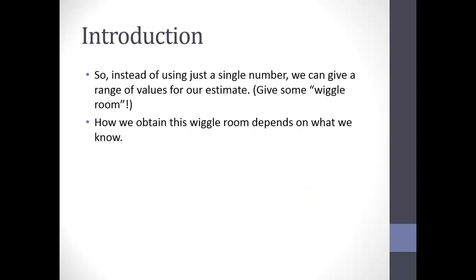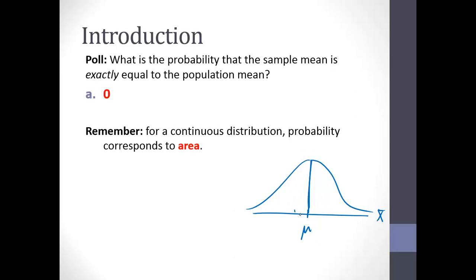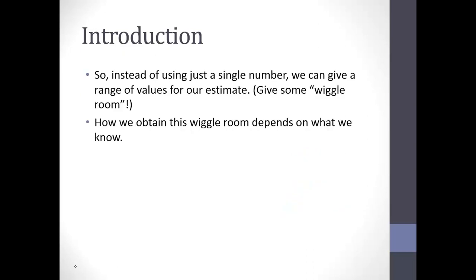Instead of saying the population mean is exactly equal to the sample mean, we're going to give a range of values and say the population mean is probably somewhere in this range. That's what we mean by wiggle room — giving a little bit on each side of our estimate to get something with a positive probability of actually happening. We need to figure out how do we determine what that wiggle room is.